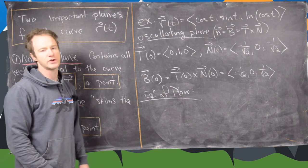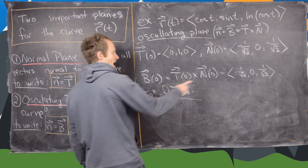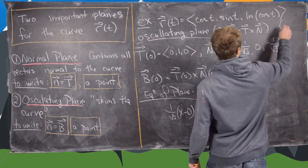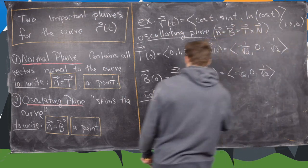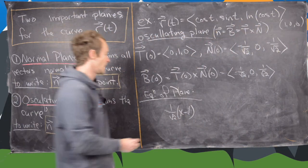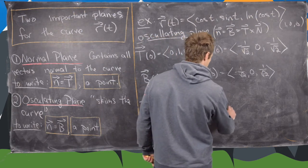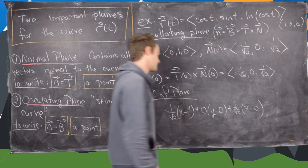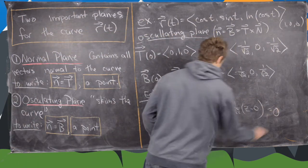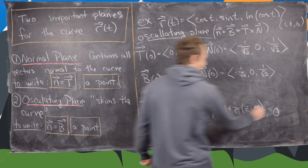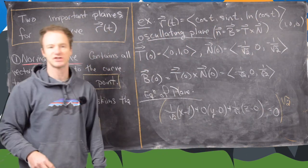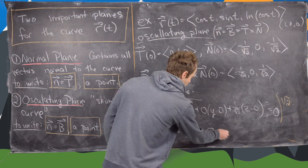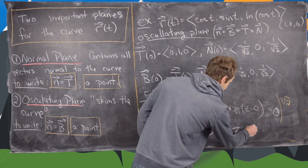Now we're ready to write the equation of the osculating plane using the same formula as before. With normal vector (−1/√2, 0, 1/√2) and point (1, 0, 0), we get: (−1/√2)(x − 1) + 0·(y − 0) + (1/√2)(z − 0) = 0. Multiplying through by √2 and distributing gives −x + z = 0, which we can write as the plane z equals x. That's our final answer.